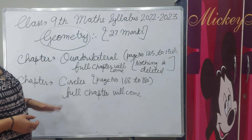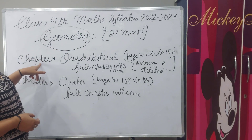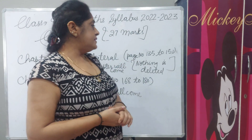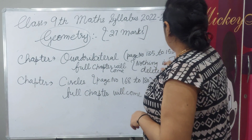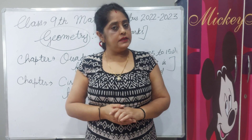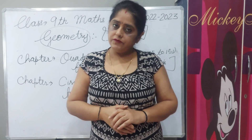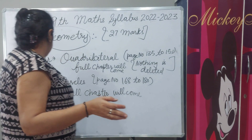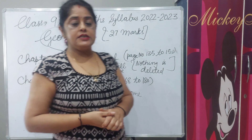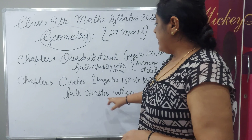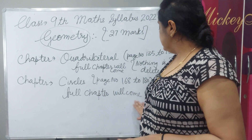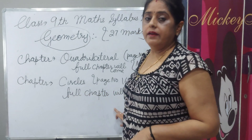Total marks for geometry will come as 27. Chapter quadrilateral is up to page number 135 to 151 — this chapter will fully come and nothing is deleted. Next chapter is circles, page number 168 to 180, and in this chapter also nothing is deleted — full chapter will come.